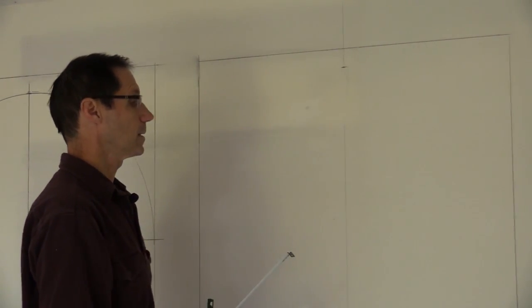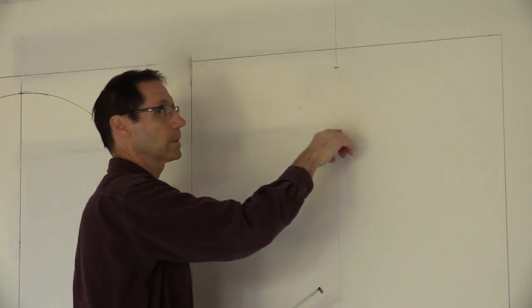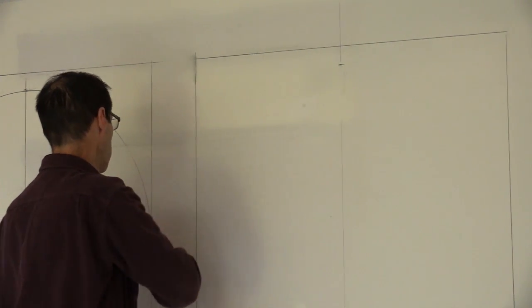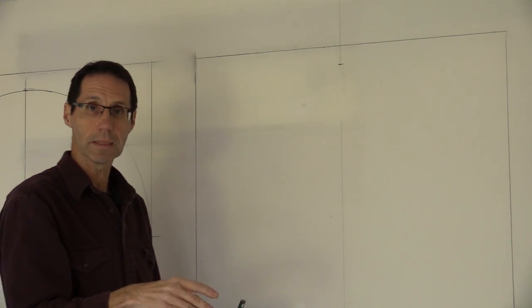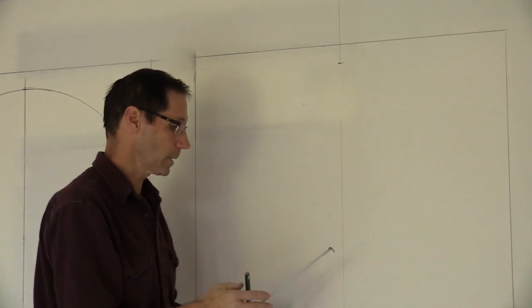Now the next thing I need to determine is where my spring line is going to be. So I need to determine the height of my rise. With the full circle arch, that rise was predetermined as the radius of the opening. But here we get to determine it ourselves.